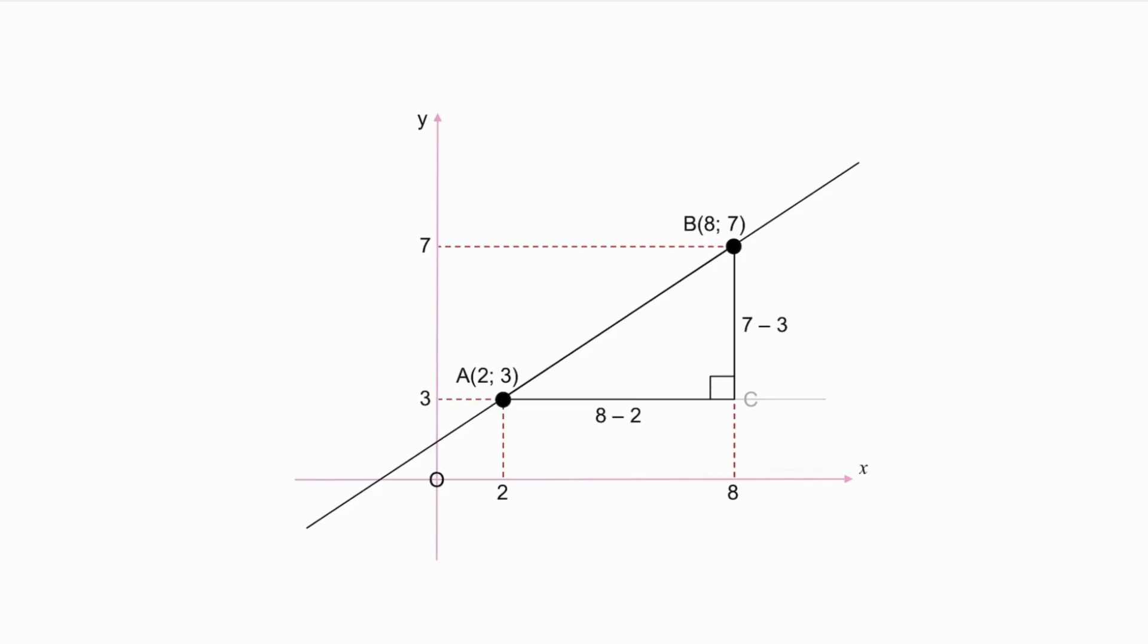Did you find that the length of AC was 6 units, and realize that was 8 minus 2, and that the length of BC was 4 units, and that was 7 minus 3? We conclude that the horizontal length AC is the difference of the x-coordinates of A and B, and the length of BC is the difference of the y-coordinates of A and B.